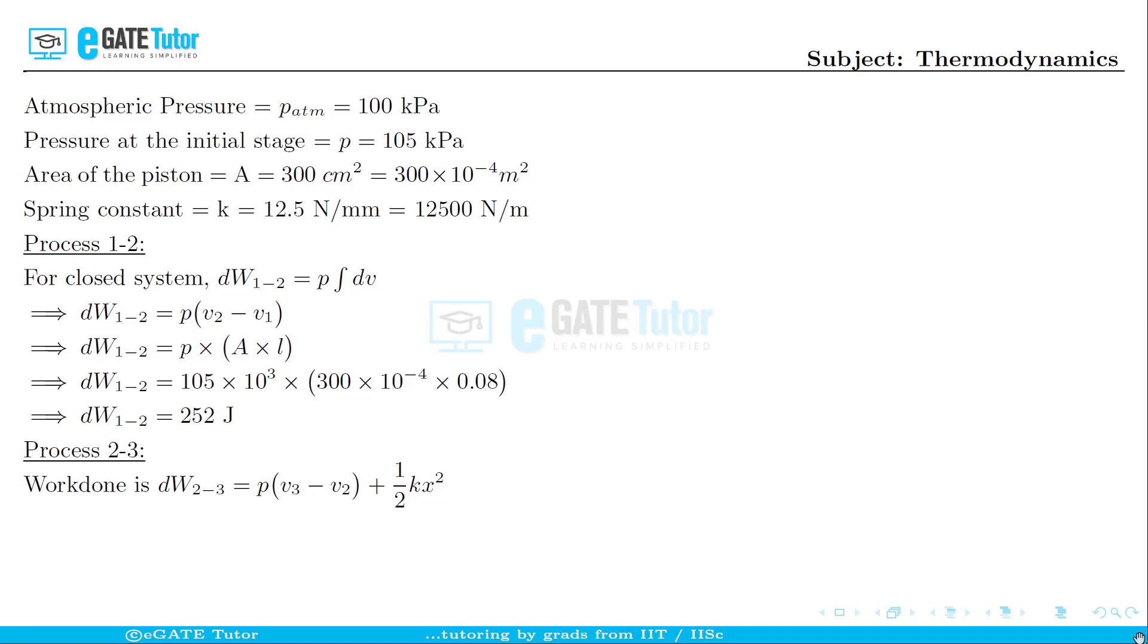So substitute the values dW₂₋₃ is nothing but 105 × 10³ × again changing volume is written as area of the piston multiplied by further 8 centimeters plus half into k into x square. Simplifying this will give us the work done in process 2 to 3 as 292 joules.